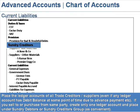Sundry Creditors. Place the ledger accounts of all trade creditors and suppliers, even if any ledger account has a debit balance at some point of time due to advance payment, etc. If you sell to or purchase from the same party, create only one ledger account and place it under Sundry Debtors or Sundry Creditors group as convenient.